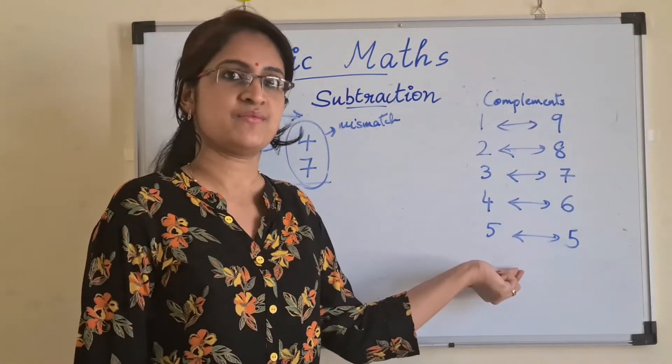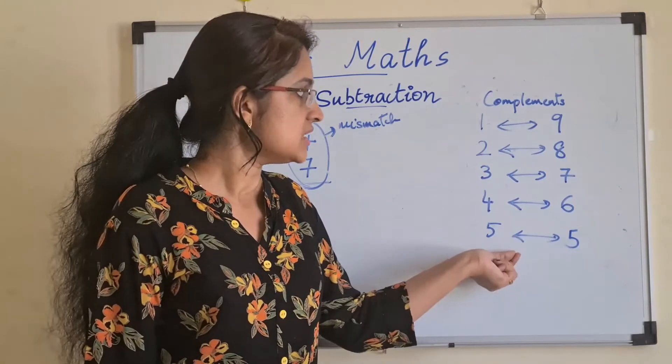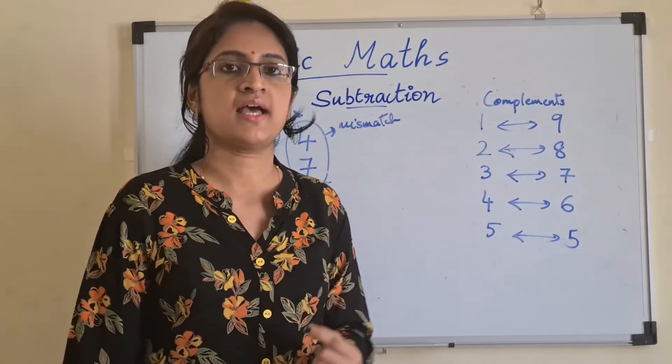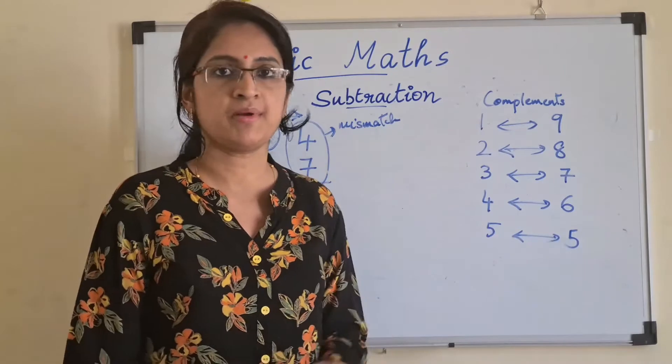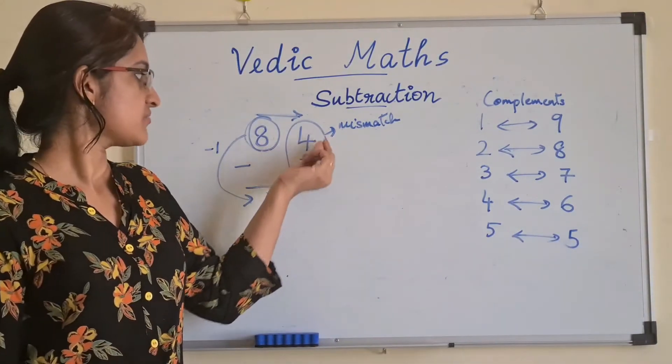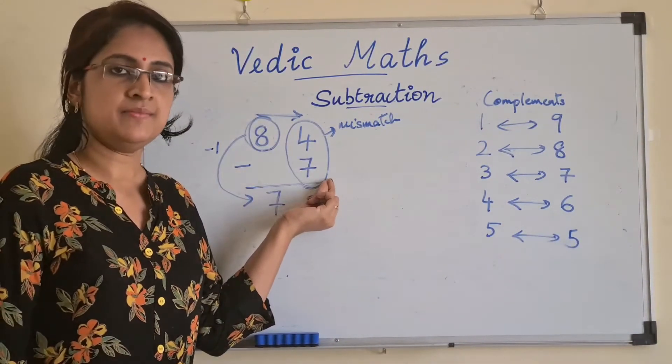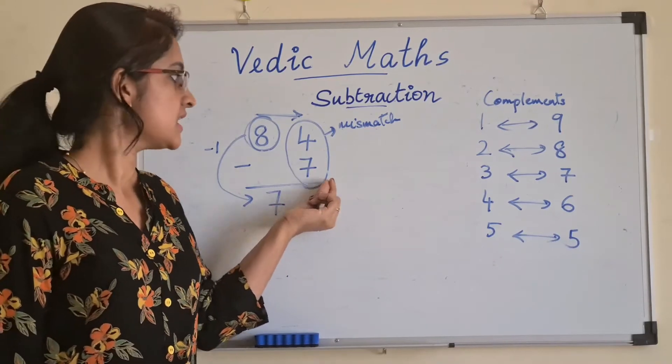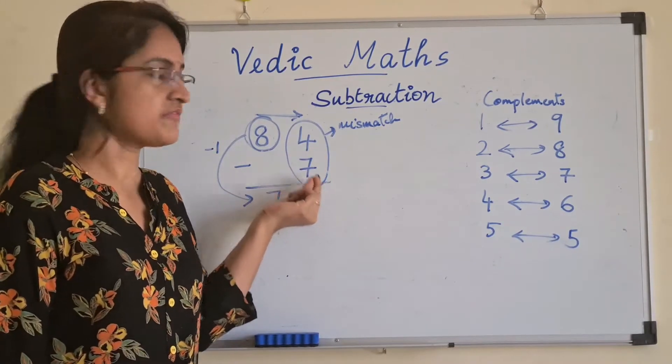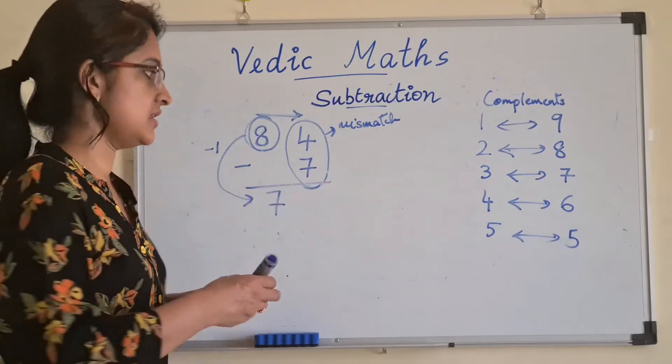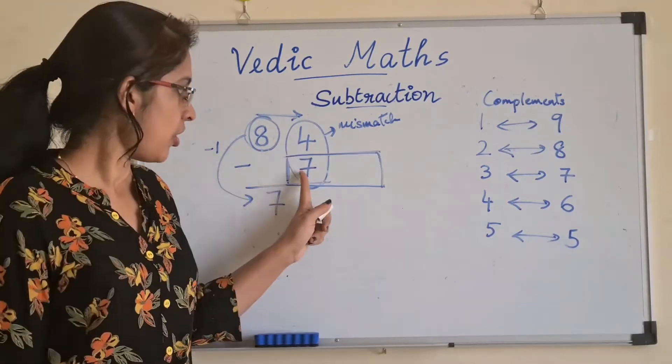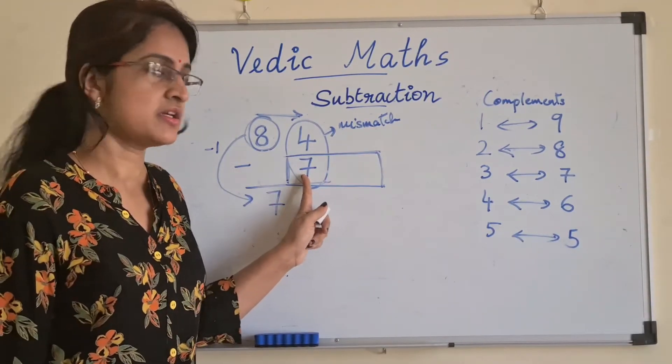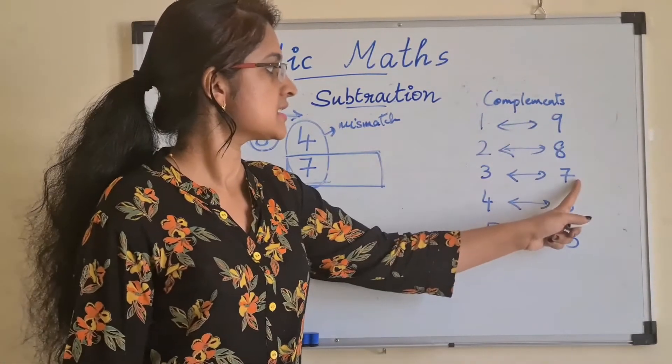which I discussed in the previous video. Each of the digits from 1 to 9 has a complement. Since we cannot subtract 4 minus 7 directly, we will find the complement of the second digit. Here, the second digit is 7. So, the complement of 7 is 3.